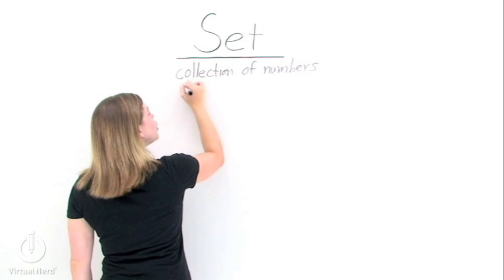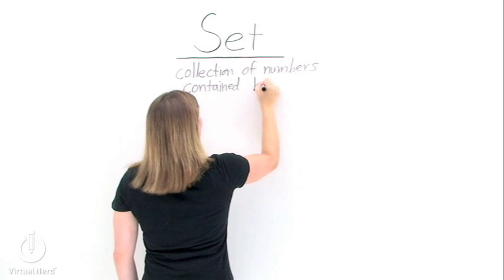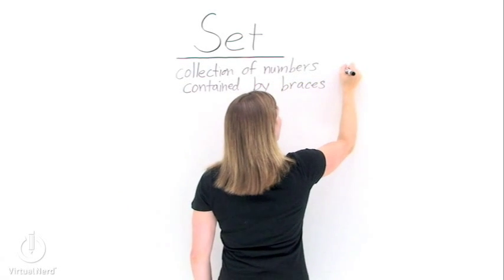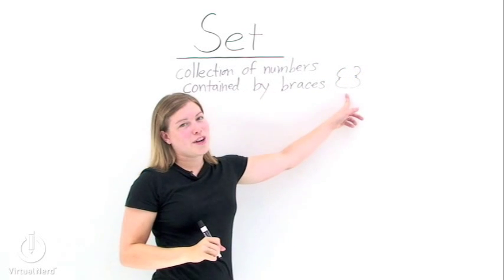Now, we need a way to show that we know that something is a set. So we need to contain it in something. In chess, you contain all of your pieces in a box. In math, we contain a set with something called braces. They're these funny looking bracket things.